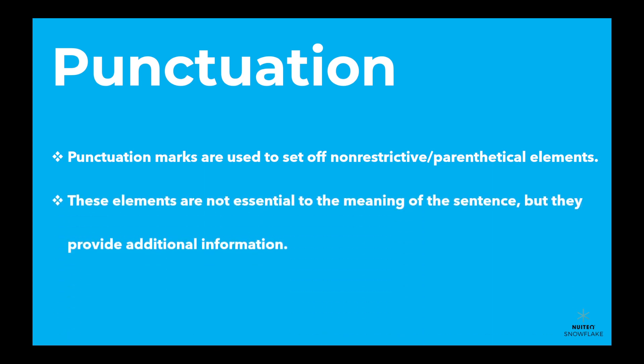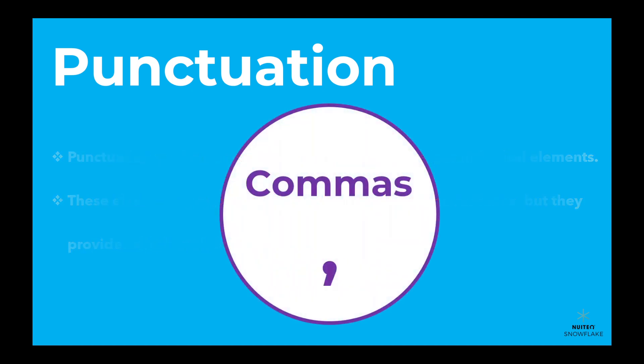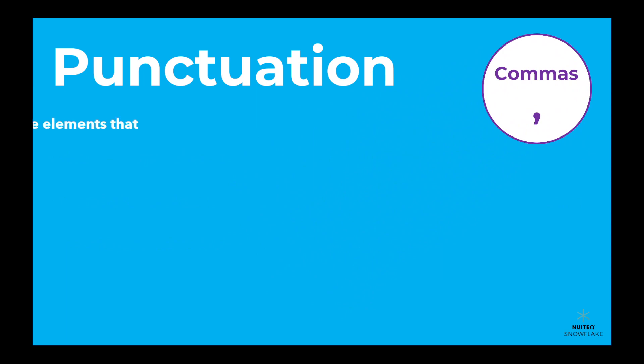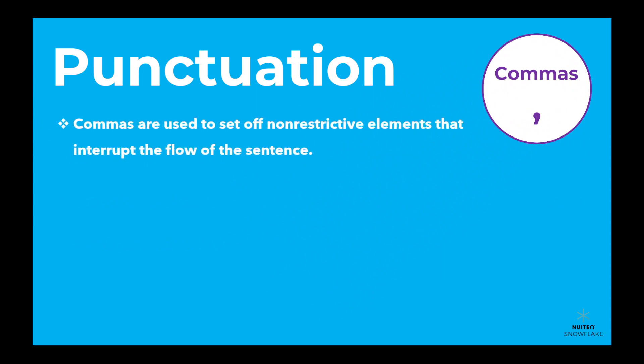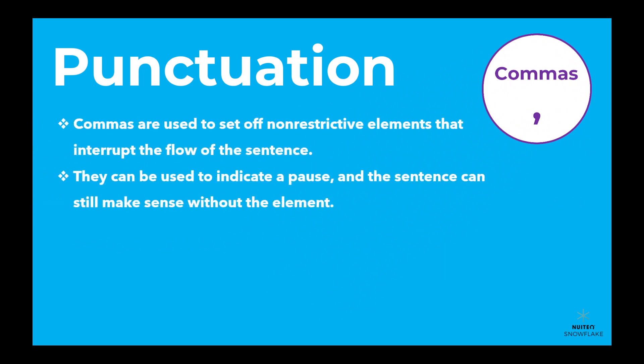These elements are not essential to the meaning of the sentence, but they provide additional information. Here are some examples. Commas are used to set off non-restrictive elements that interrupt the flow of the sentence. They can be used to indicate a pause, and the sentence can still make sense without the element.